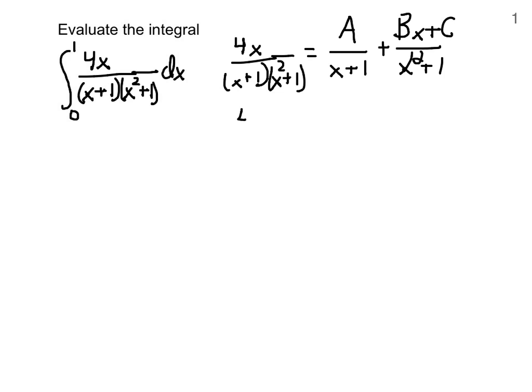And so, the combined numerator should be the same as if we were to put these two fractions on the right-hand side together by multiplying by the other part of the denominator that it's missing. So, a gets multiplied by x squared plus 1, and bx plus c gets multiplied by x plus 1.